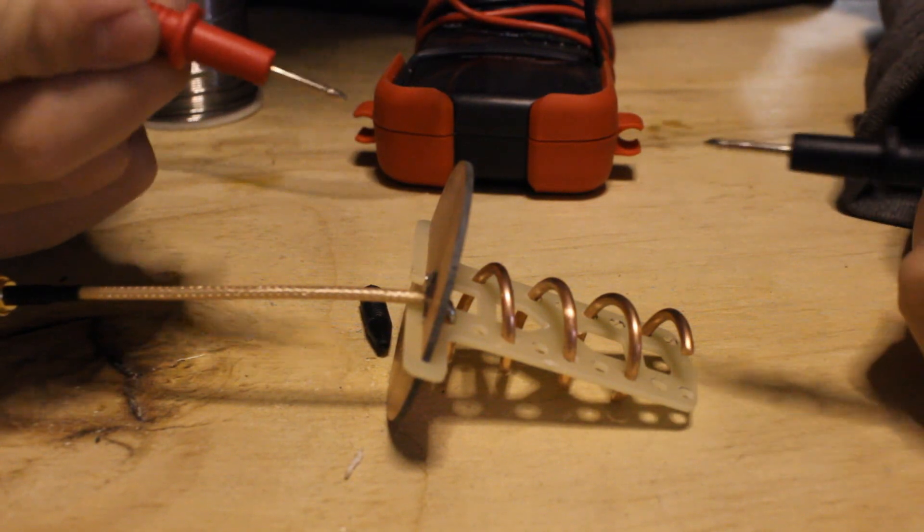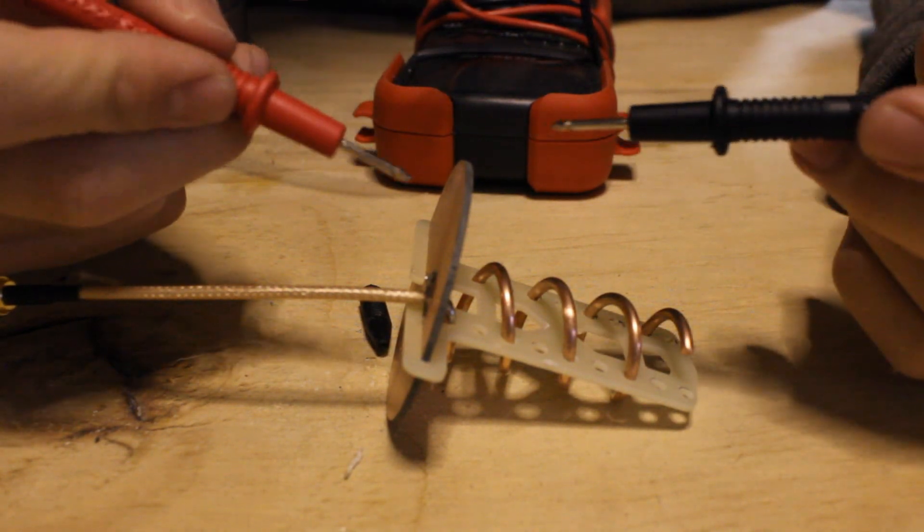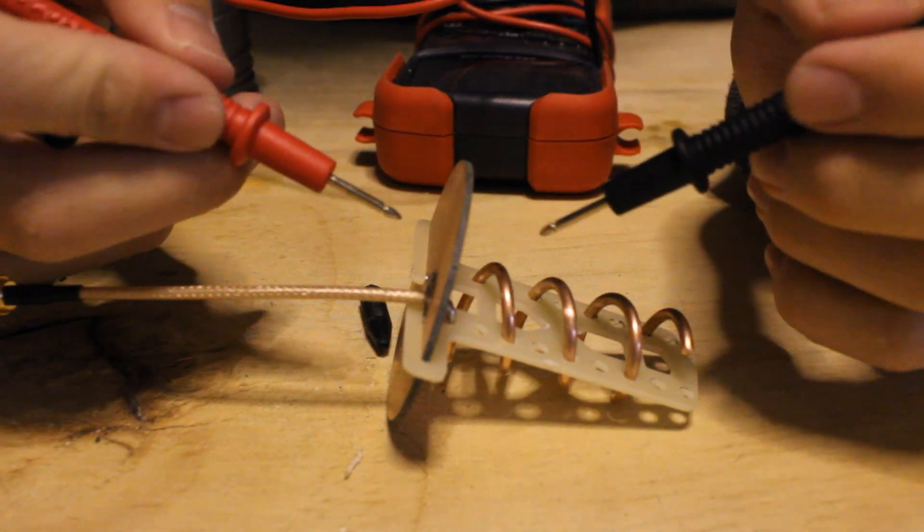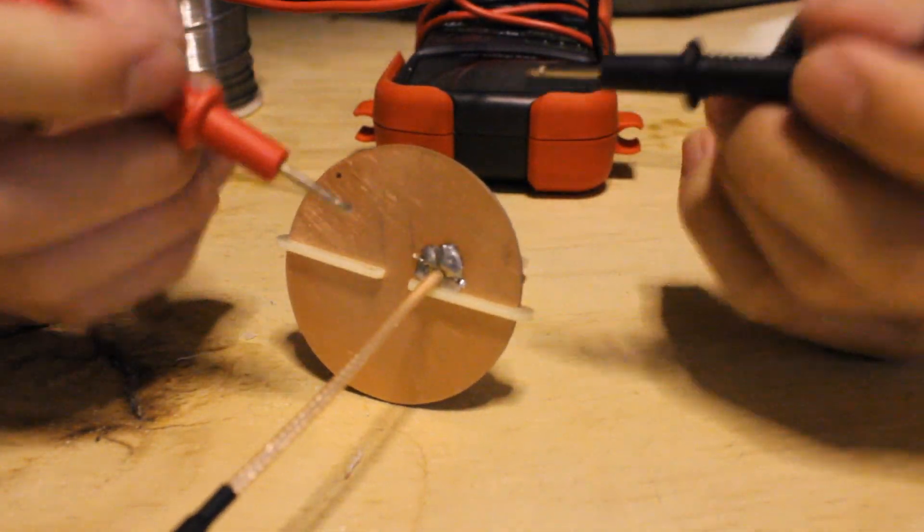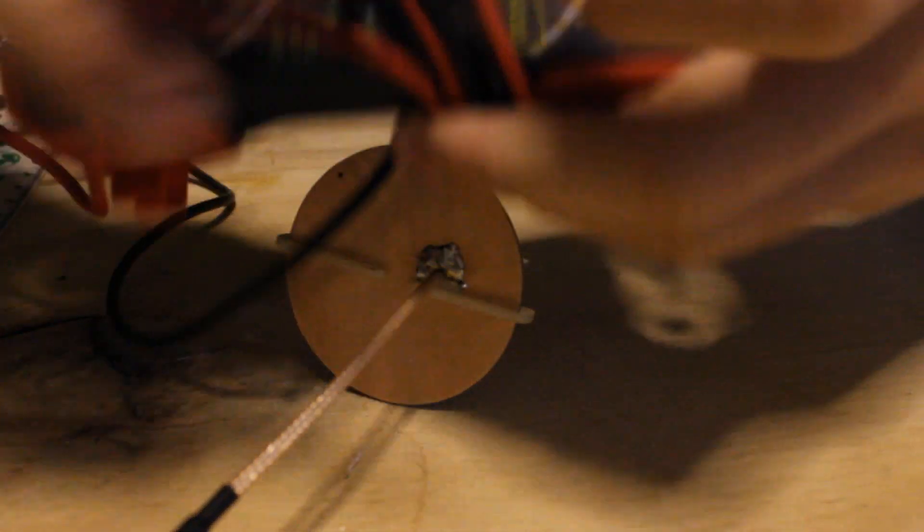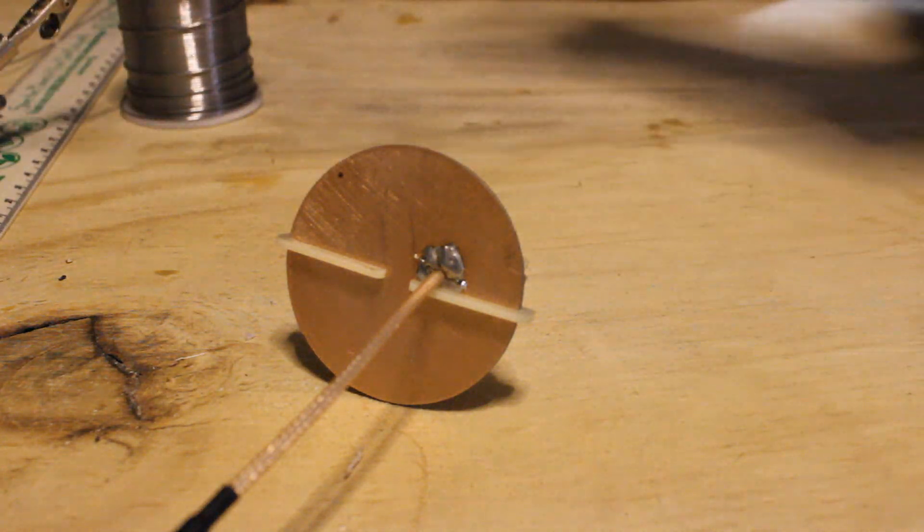But now what we're gonna do is we're gonna use a multimeter to check continuity to make sure we're not shorting out anything. So what you want to do is, if you have a multimeter like this, let me just remove the coiling so you guys could all see.